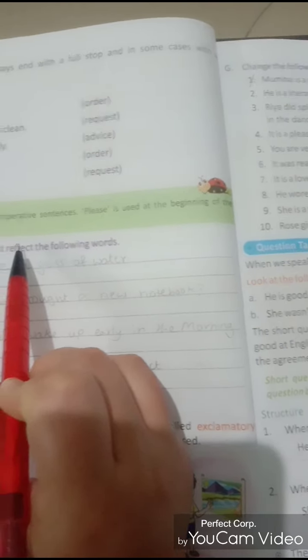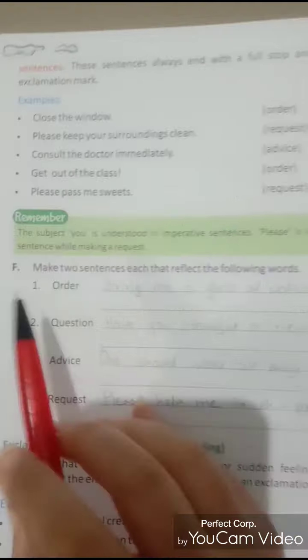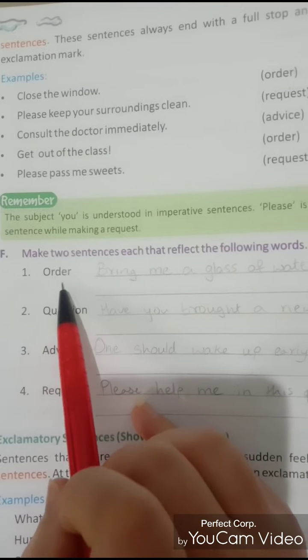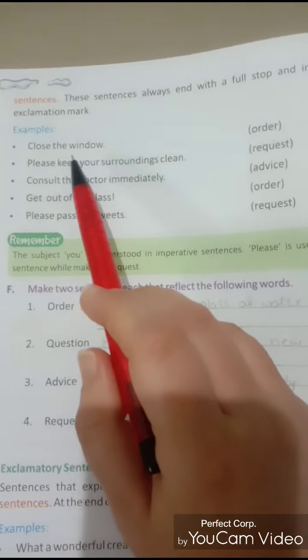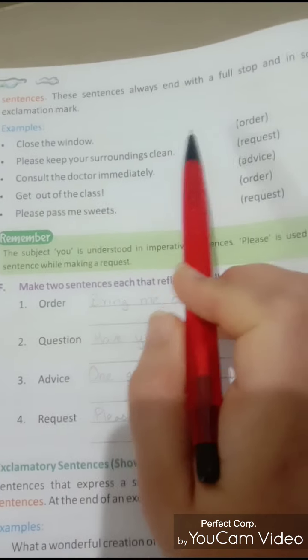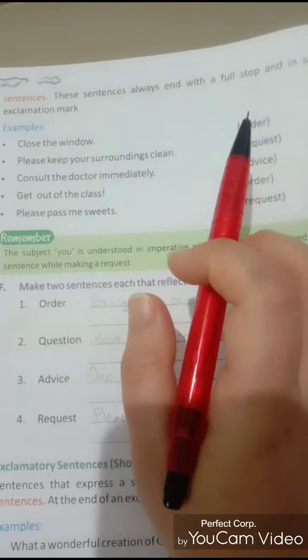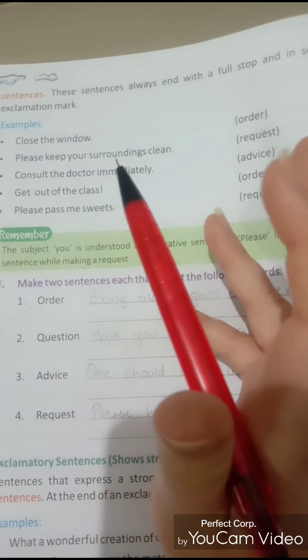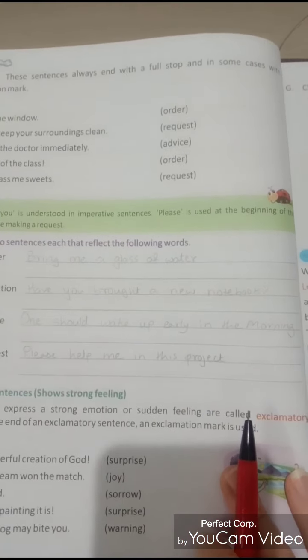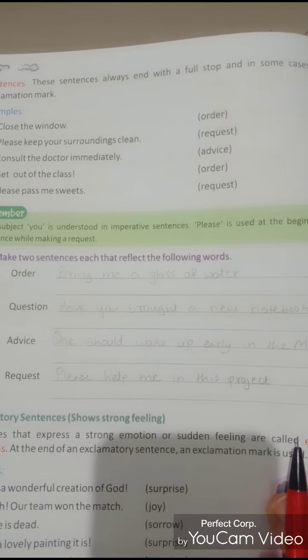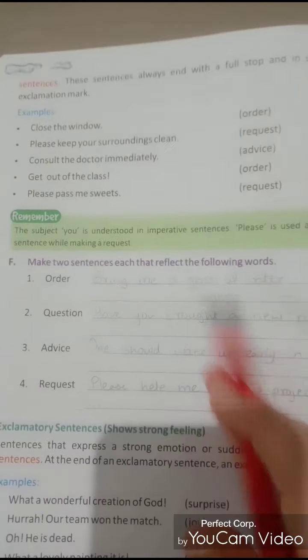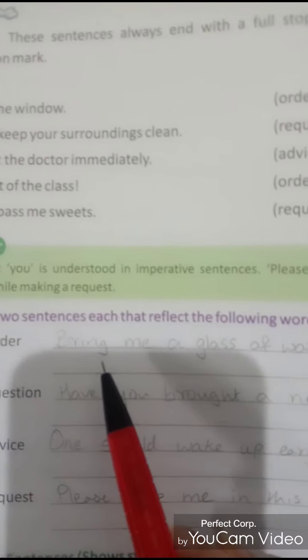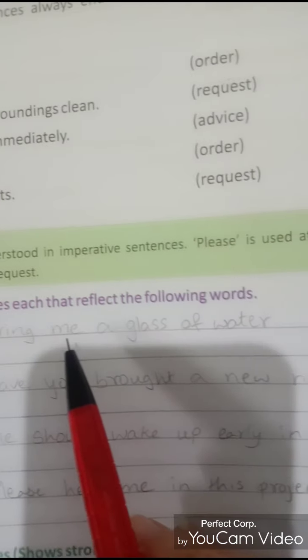Moving on — make two sentences each that reflect the following words. You have to make a sentence which reflects the given word. For example, 'Close the window' is an order. In class I say 'Sit down' — that's an order. If I say 'Please sit down' then it's a request. If I say 'It would be better if you sit down, you will feel well' — that is advice.